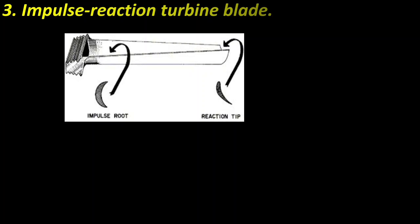Impulse-reaction turbine. You can see here in this picture that the root of the impulse-reaction turbine blade is impulse type and the tip is reaction type. So most modern turbine engines incorporate impulse-reaction turbine blades to more evenly distribute the workload along the length of the blade. With this type of blade, the blade base is impulse shaped while the blade tip is reaction shaped. The desired result is a uniform velocity and pressure drop across the entire blade range.